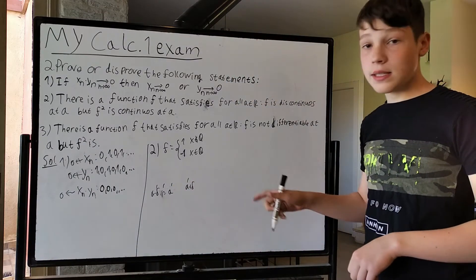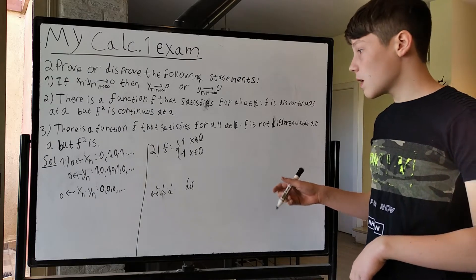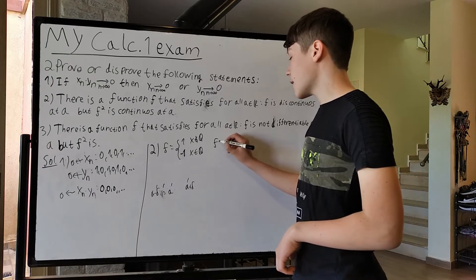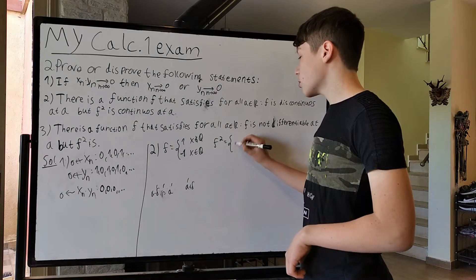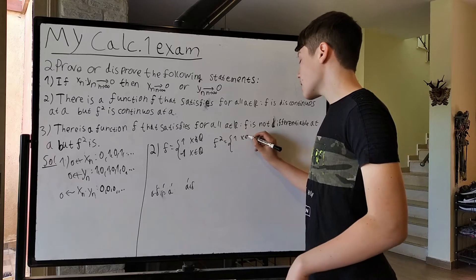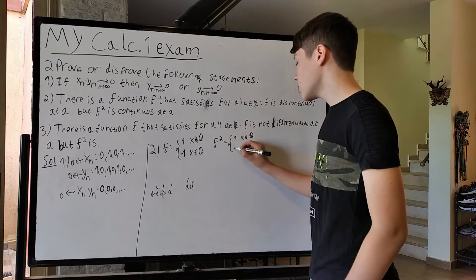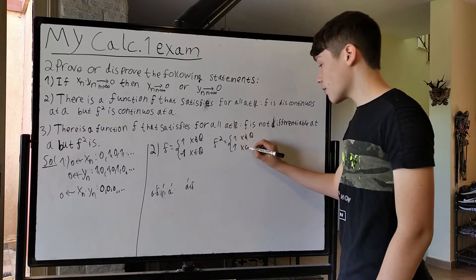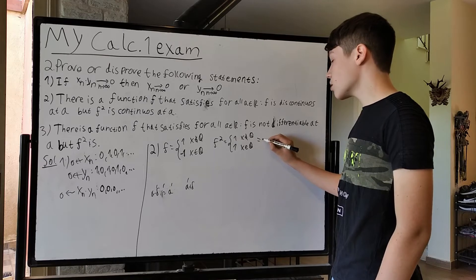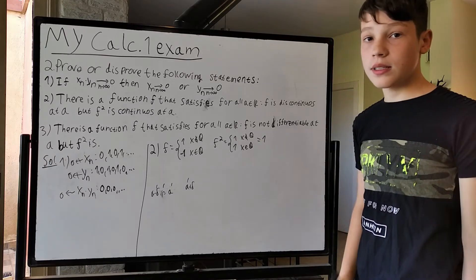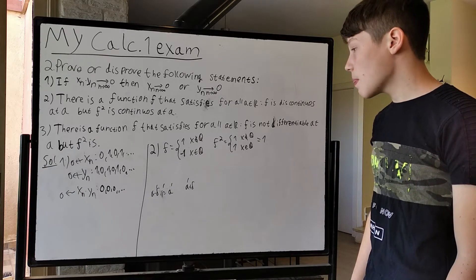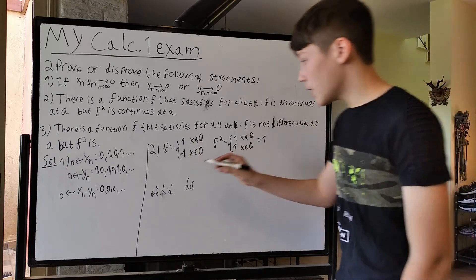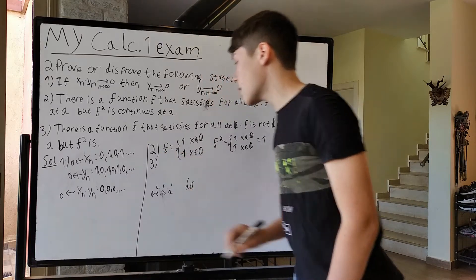So f is discontinuous at any a. But notice that if we look at f², it equals 1 if x is irrational — that's 1² — and it equals (−1)² = 1 if x is rational. So all in all, f² = 1, which is continuous at any a. This not only provides an example for number 2, it provides an example for number 3 as well.